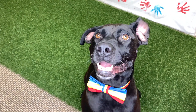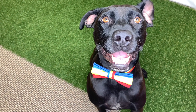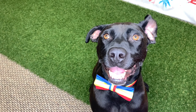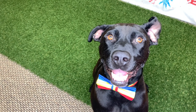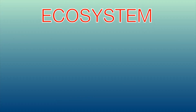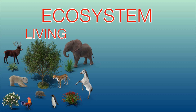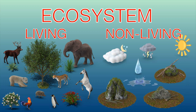Awesome Diggy Dog, I'm so excited to learn about ecosystems! Wait a minute - what exactly is an ecosystem? What is an ecosystem? An ecosystem is a group of both living and non-living things that live in the same area and interact with each other.